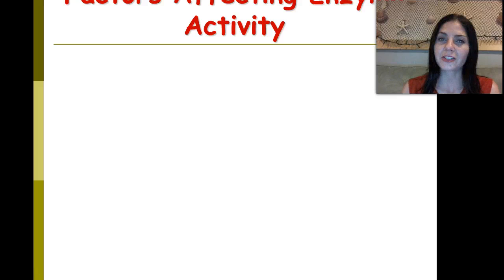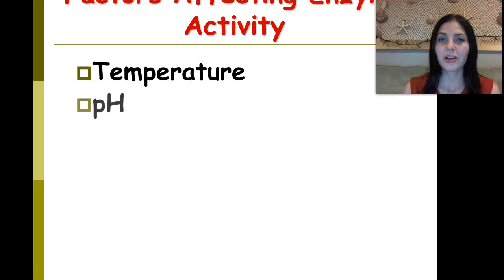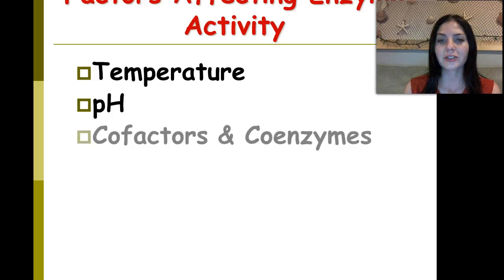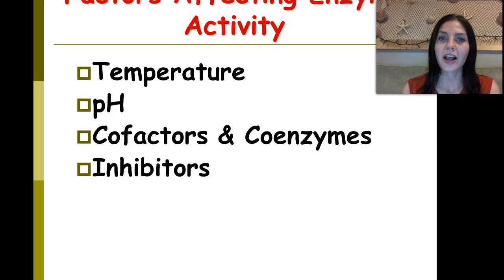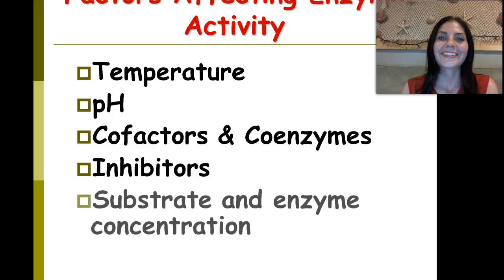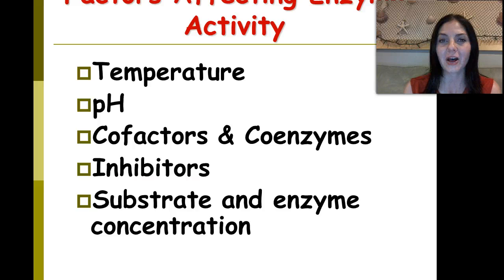What are factors that affect enzyme activity? We have temperature, pH, cofactors and coenzymes, and inhibitors. Inhibitors are things that stop a reaction from occurring — the word inhibit means to stop. Substrate and enzyme concentration also affects the activity of the enzyme itself.